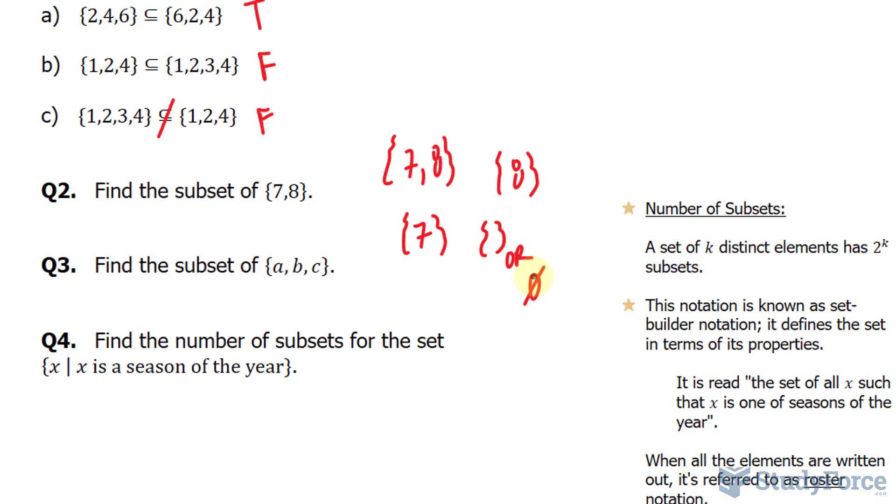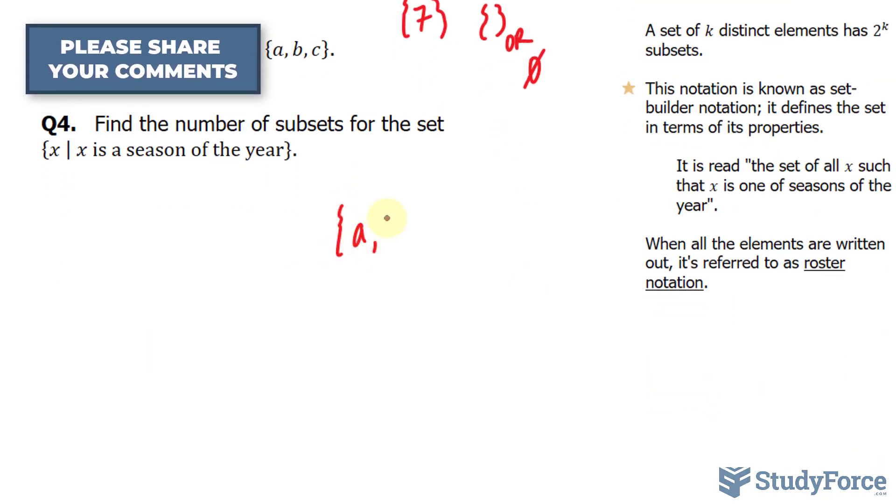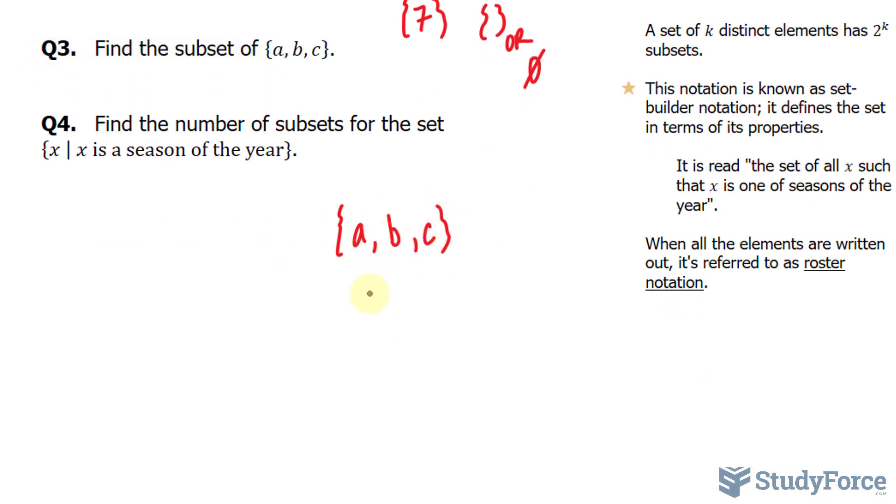What about the subsets for A, B, and C? One example could be A, B, and C. Another for each letter individually. A, B, and C. We're up to four already.